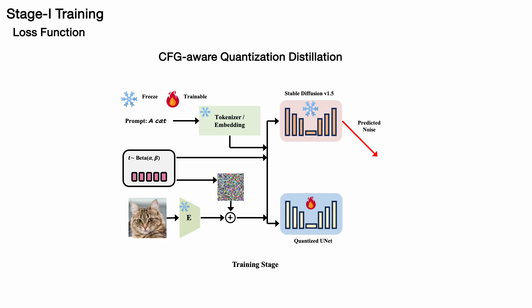After initialization, we begin updating the parameters of the quantized model through a two-stage training process. We utilize distillation loss to minimize quantization error. Initially, text prompts, images, and time steps are fed into the pre-trained, full-precision, stable-diffusion V1.5 model to predict the noise.